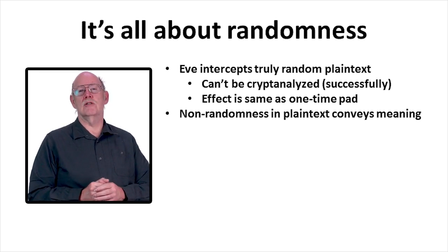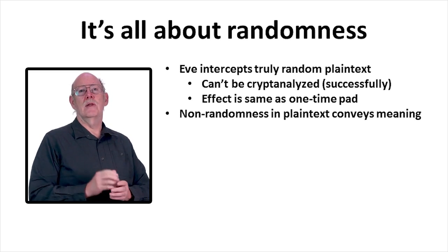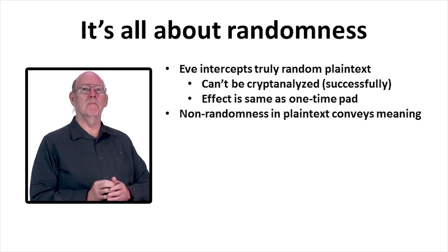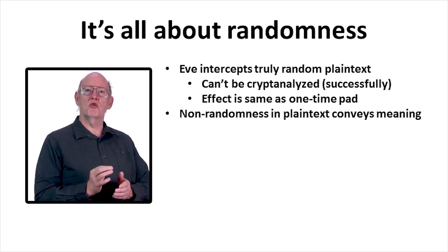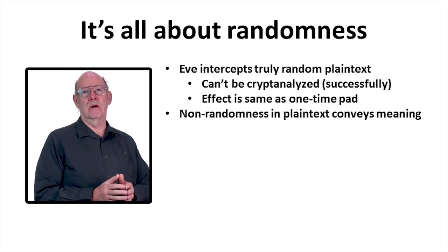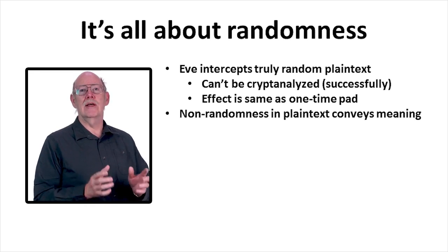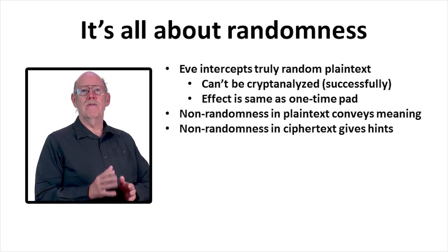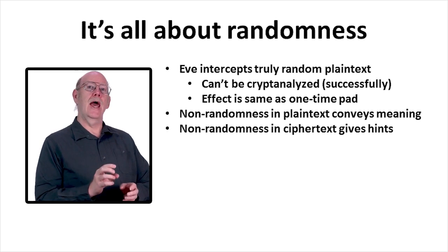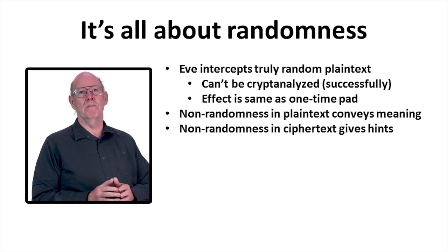Unless the specific goal is to transmit a random sequence of characters, which occasionally it is, the plaintext message is always highly non-random because information requires structure to communicate. In fact, later when we look at information theory, we'll see that the very notion of information and randomness are intimately linked. If our enciphering algorithm leaves some or all of this structure intact within the ciphertext, then an adversary has a lot to work from.